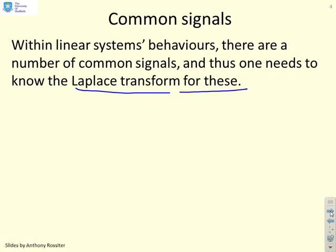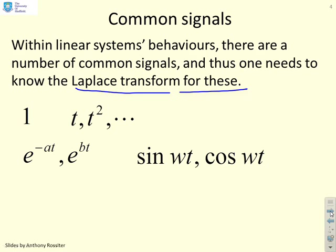So what might these signals be? Well, the signal 1, or a constant, and that could be a constant of 3 or 4, obviously. Signals like t and t squared and t cubed and so on. Signals like e to the minus at or e to the bt, sine omega t, cos omega t, t e to the minus at or t sine omega t, e to the minus at sine omega t, and e to the minus at cos omega t.